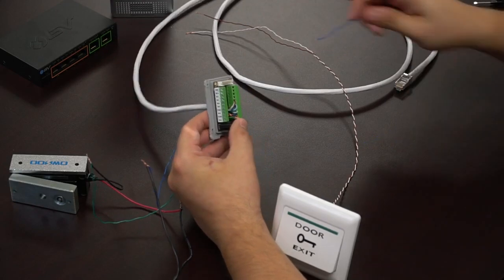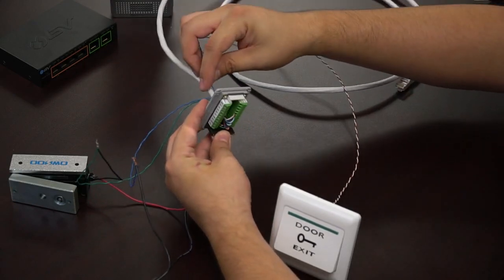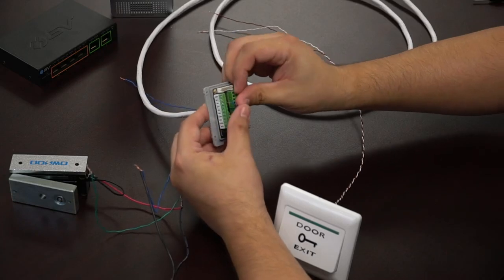Next, we're going to go ahead and take a secondary wire, a secondary blue wire, and connect that into the N1 negative.